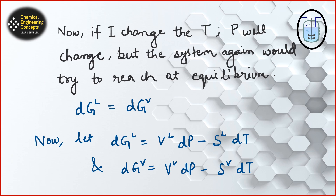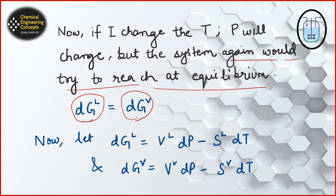Gibbs free energy is a function of pressure and temperature. Now if I change the temperature, the pressure will obviously change, but the system will again try to reach equilibrium. That means the change in Gibbs free energy for the liquid phase will be equal to the change in Gibbs free energy for the vapor phase.